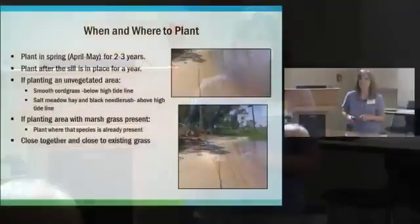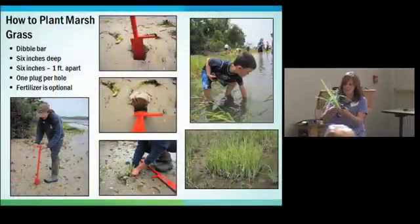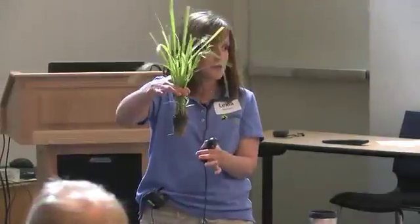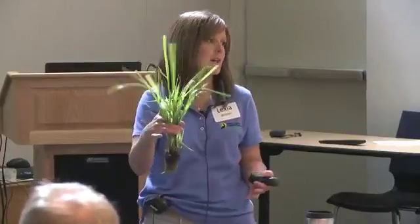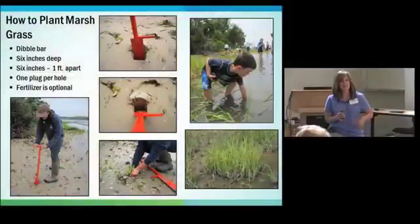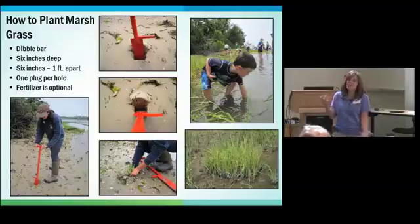When planting, push the plug in very deep — it's okay to bury some of the green part under the sediment. You don't want plugs washing away at high tide. Planting at high tide creates good suction and can result in better planting. Test by giving the plant a tug. Fertilizer such as Osmocote pellets is optional — recommended in sandier soils but may not be needed in mucky or muddy substrates. Plant one plug per hole.